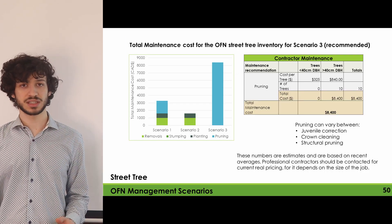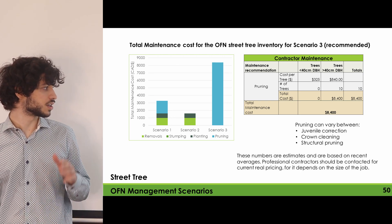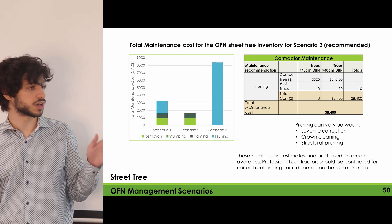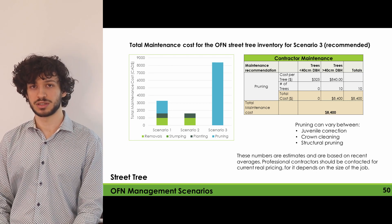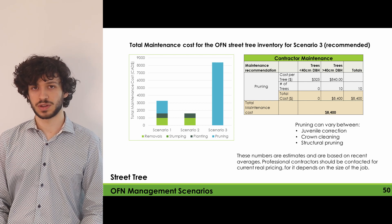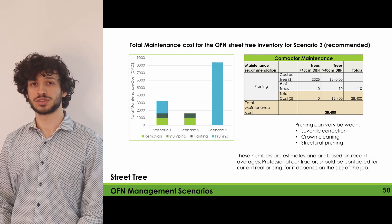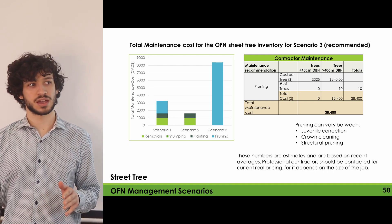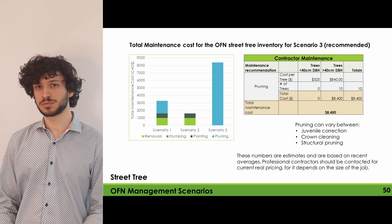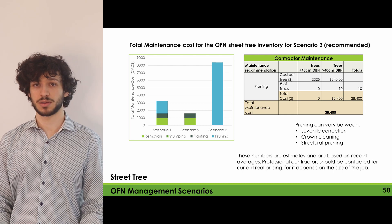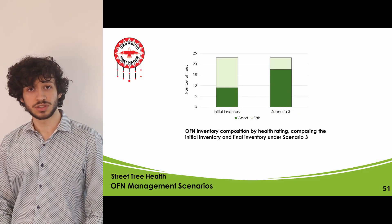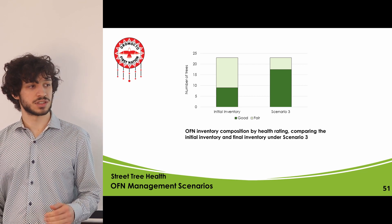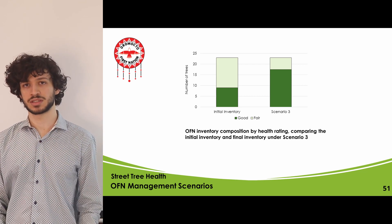Looking at total maintenance costs: Scenario 3 is all pruning, with 10 trees expected to be pruned to improve them from fair to good condition, costing around $8,400. A professional should be contacted to get real-time numbers and to assess whether these trees will benefit from pruning. Under Scenario 3, the maintenance schedule with pruning increases the proportion of trees in good condition compared to the initial inventory.